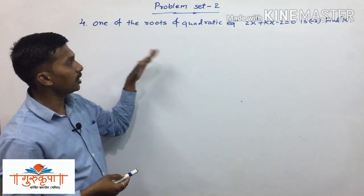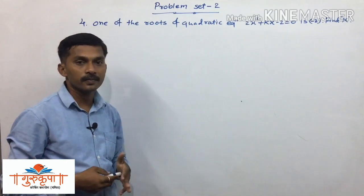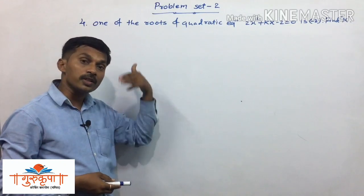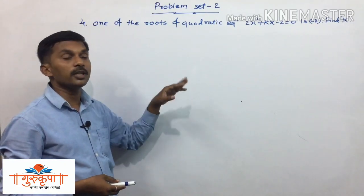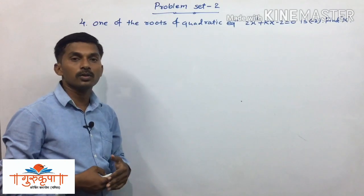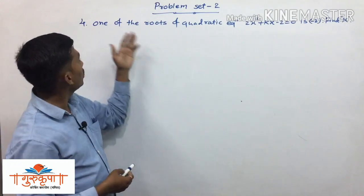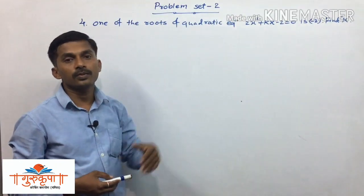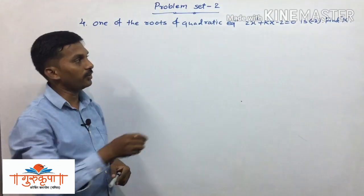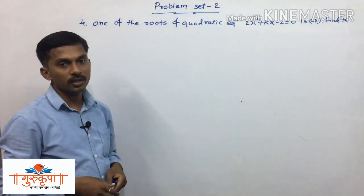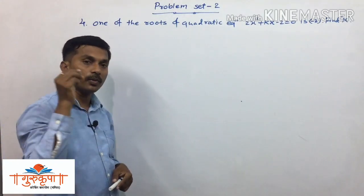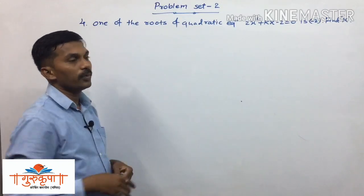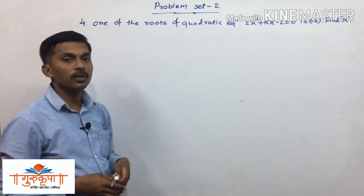Here you need not write LHS and RHS separately. We only write LHS and RHS separately when we have to decide whether a given value is the root of the quadratic equation or not. But here it is already given that one root is minus 2, so directly we will substitute minus 2 in place of x to get the value of k.